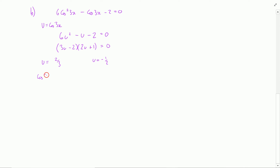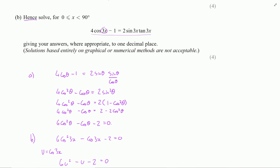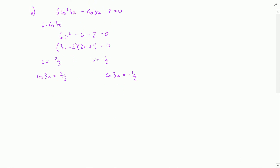From the first bracket, u = 2/3, and from the second bracket, u = −1/2. Since u = cos(3x), that means cos(3x) = 2/3 or cos(3x) = −1/2. Using a calculator, the primary solution for cos(3x) = 2/3 gives approximately 48.2°, and for cos(3x) = −1/2 the primary solution is 120°.